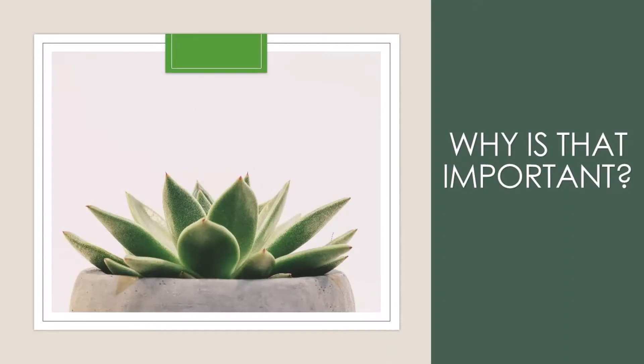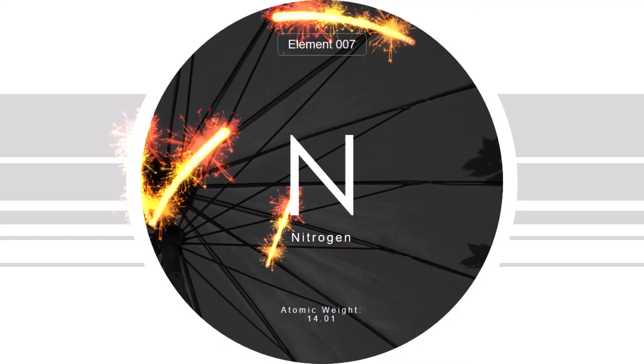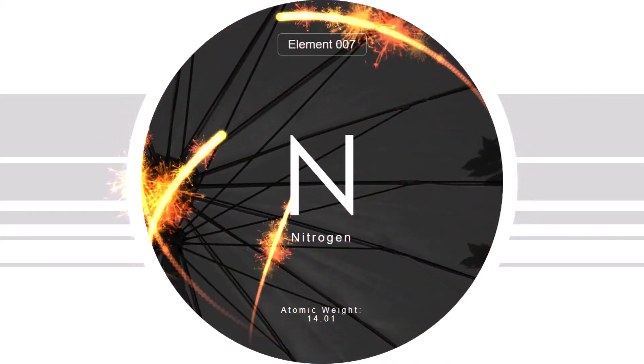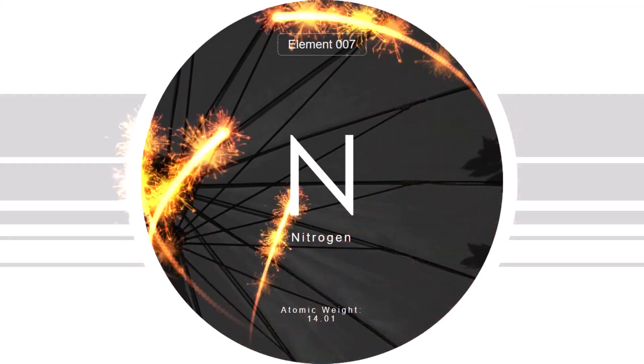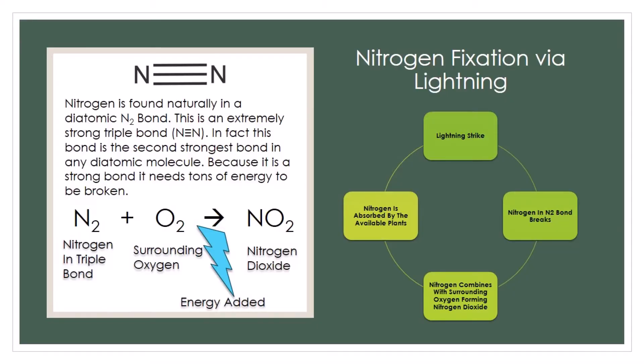Why is that important? Plants need nitrogen. Nitrogen is found naturally in a diatomic N2 bond. This is an extremely strong triple bond. In fact, this bond is the second strongest bond in any diatomic molecule.